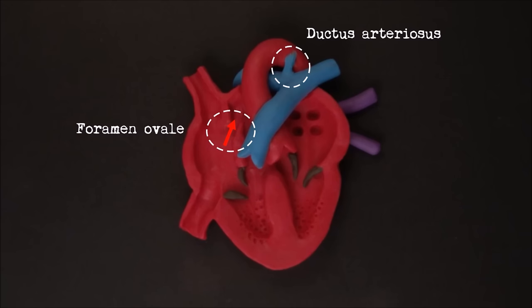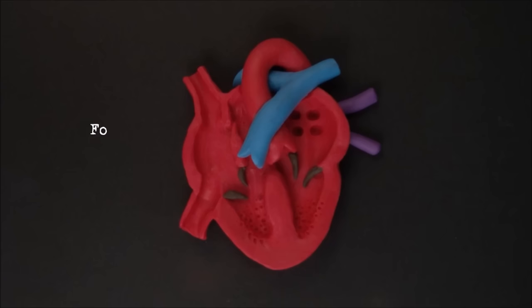These two shunts help to bypass the pulmonary circulation and both close up after birth to leave remnants called the fossa ovalis and ligamentum arteriosum.